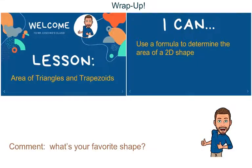All right, guys, that's it. Please comment, what's your favorite shape? Today was pretty straightforward since it's just formulas. We learned about area of triangles and trapezoids. Now you should be able to use those two formulas to determine the area of those 2D shapes. Go back to the calendar and complete any other assignments you have left for the day. Let me know if you have any questions. Bye!